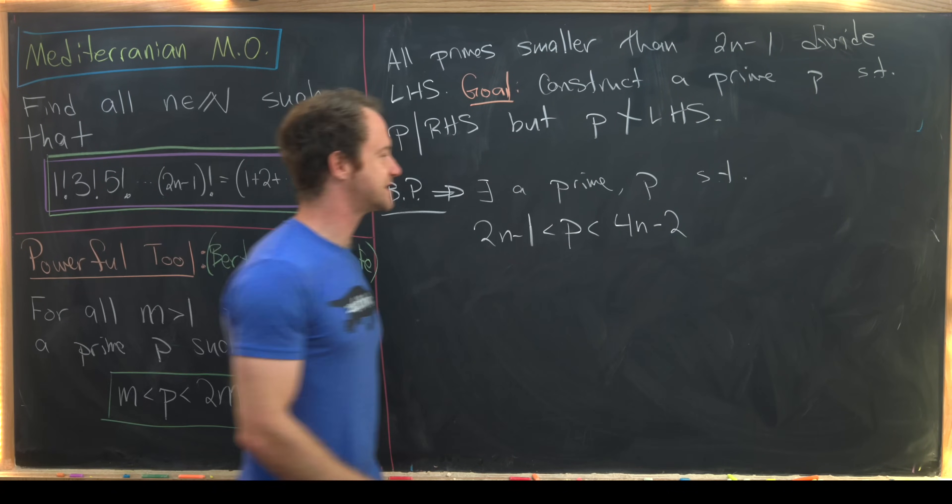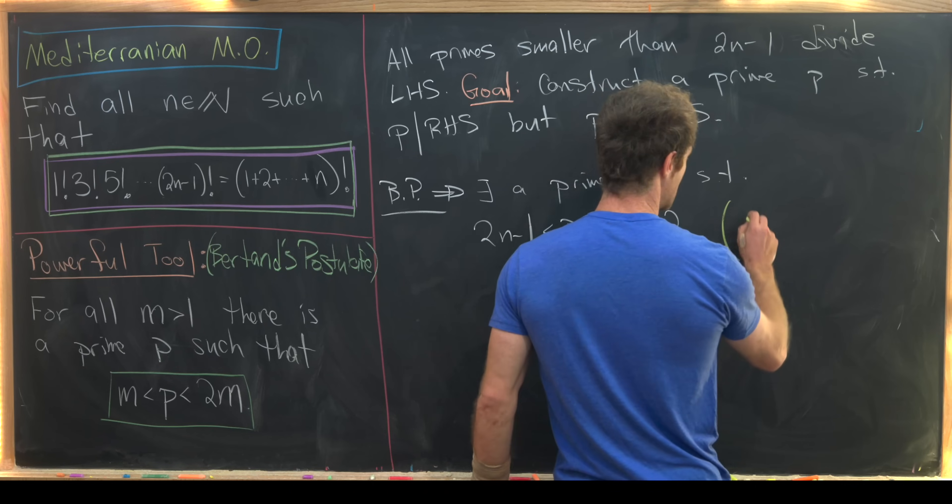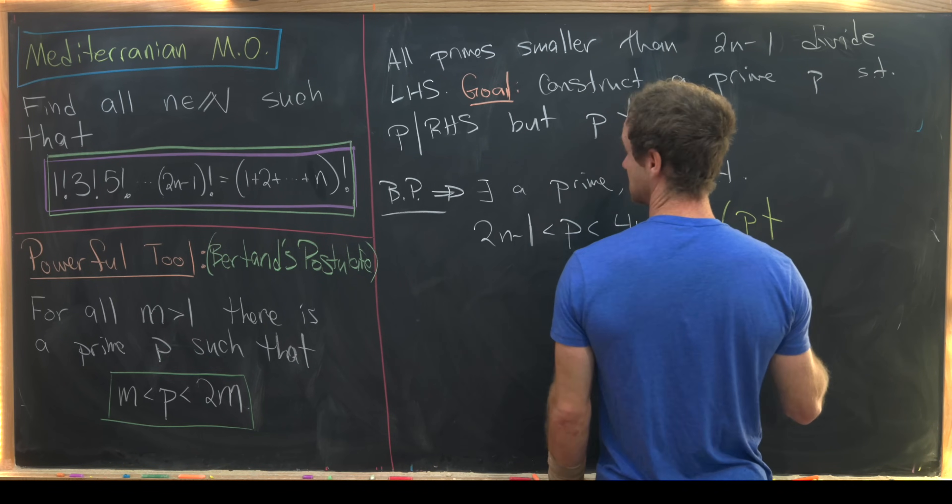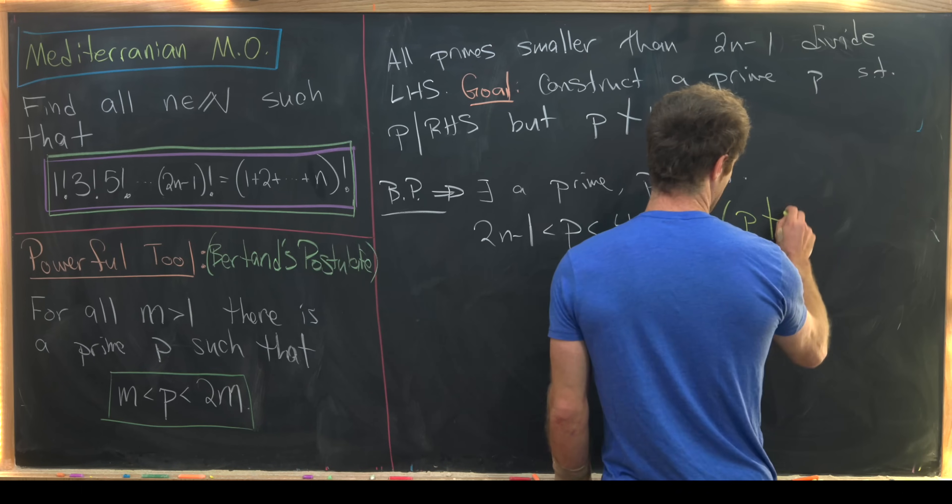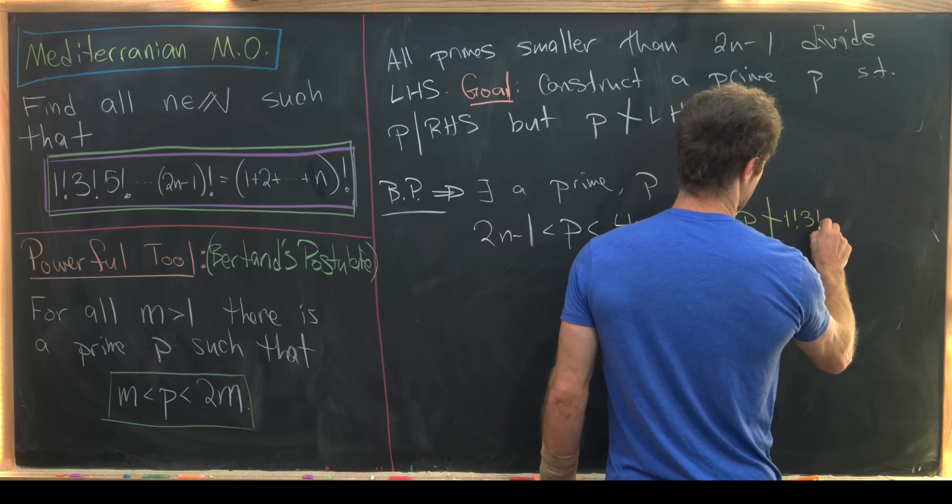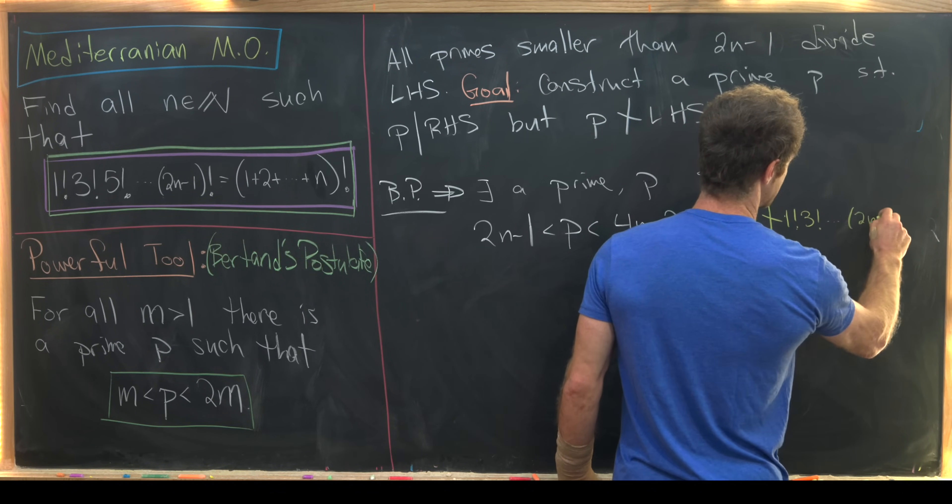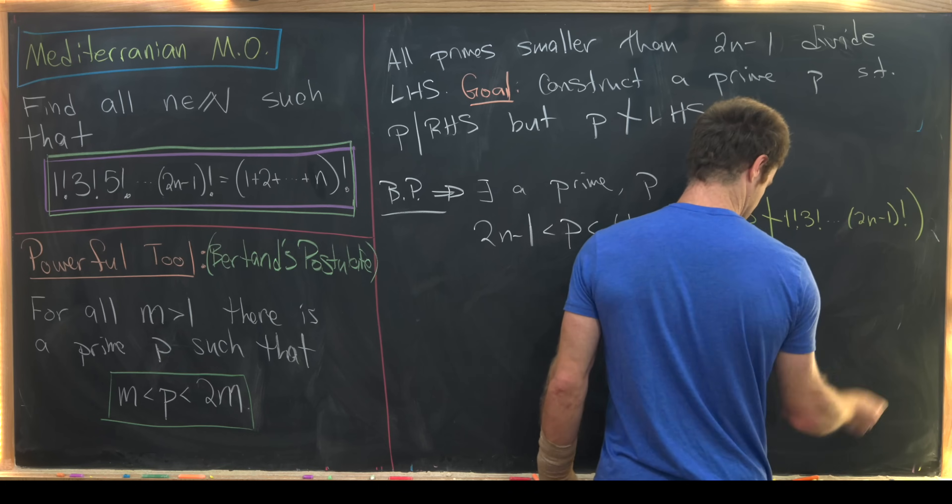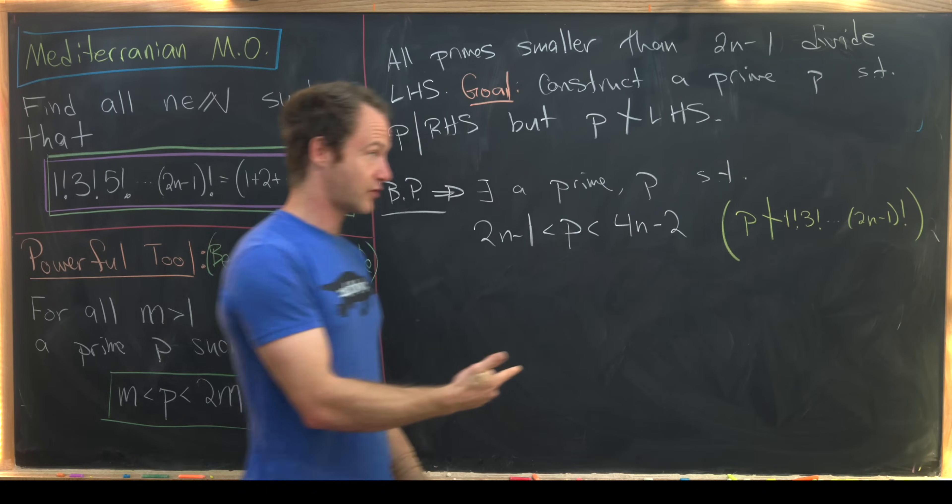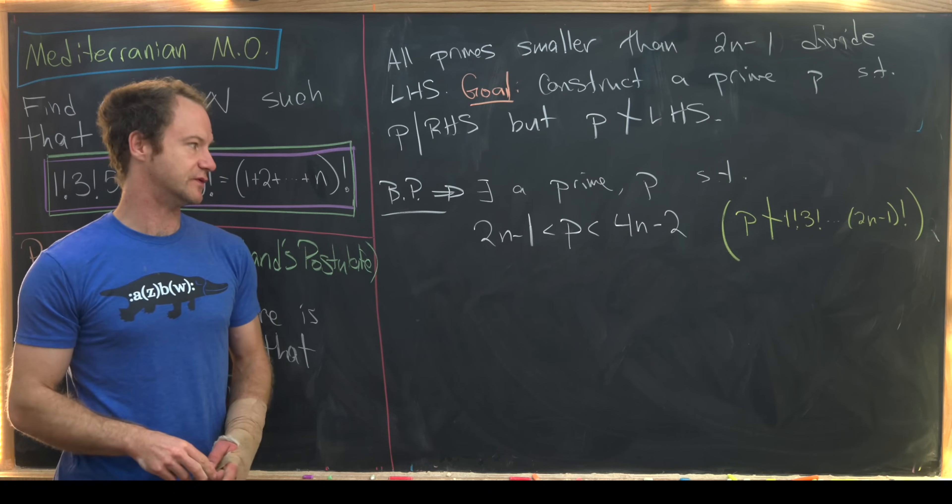And so I want to notice by our construction we see that p does not divide the left-hand side of our setup. I'll write that out: 1 factorial, 3 factorial, all the way up to 2n minus 1 factorial. That's because it's a prime that's larger than 2n minus 1.